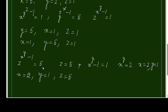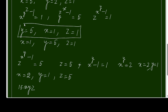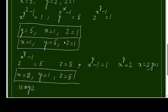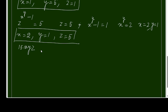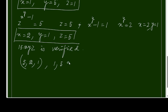We can verify that all three triplets satisfy the equation. The three solutions are: (5, 2, 1), (1, 5, 1) — wait, that should be (1, 5, 2) — and (2, 1, 5). All three solution triplets are verified with the original equation. The solutions are (5, 2, 1), (1, 5, 2), and (2, 1, 5).